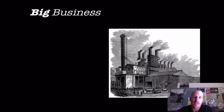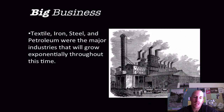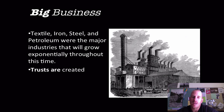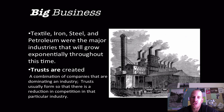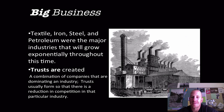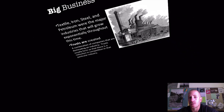Big business in the late 1800s — textiles, iron, steel, and petroleum — are the major industries that grew exponentially. Within these major companies, they created what is known as a trust, which is a combination of companies dominating an industry. Trusts are usually there to reduce competition, and this is really going to ring true when we're talking about Standard Oil and John D. Rockefeller.